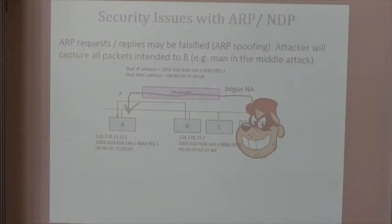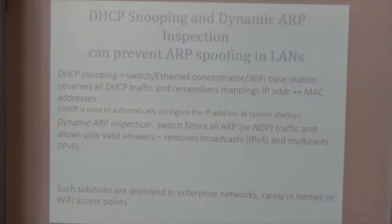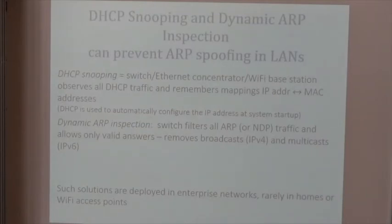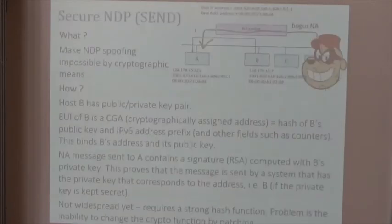This is called DHCP snooping. There's no change to ARP itself — all hosts continue to do the same thing — but the Ethernet concentrator, when it sees an ARP request or an NDP neighbor advertisement packet, will intercept it, read it, and give its own controlled answer. Since the answer is under the control of a secured box, you get a secure answer. This is one of the solutions typically used.